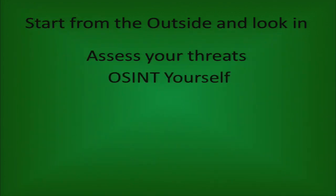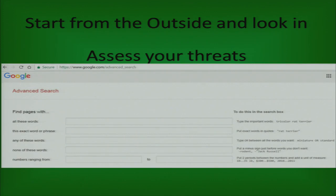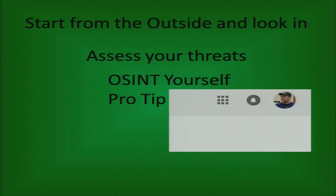The next thing in assessing your threats is to OSINT yourself. Is everybody familiar with the Google Advanced Search screen? Google yourself, Google your company, see what's out there. Google your top executives and see what's on the Internet about them, because you may not know — and that could become critically important. Trust me, the people that are hacking you are doing exactly that.